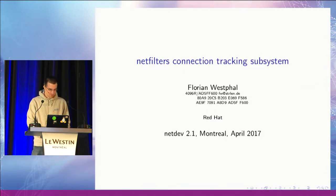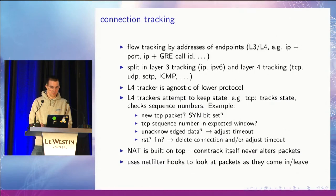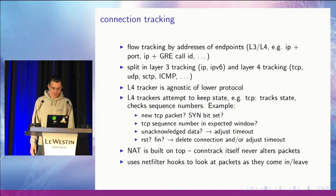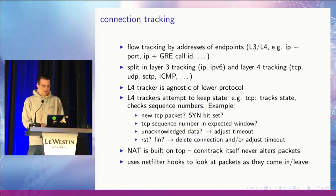Let's first discuss what netfilter connection tracking is actually about. Basically it's flow tracking by addresses of the endpoints, so in layer 3 or 4 you might have IP addresses and ports, or IP addresses and GRE call IDs. Programmatically in netfilter we have split the tracking into layer 3 and layer 4, so the layer 4 tracking modules like TCP or UDP only exist once and they don't care if they run on top of IPv4 or IPv6.